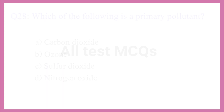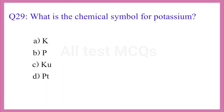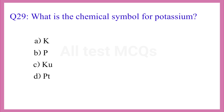Question No. 29. What is the chemical symbol for potassium? The correct answer is option A. Capital K.